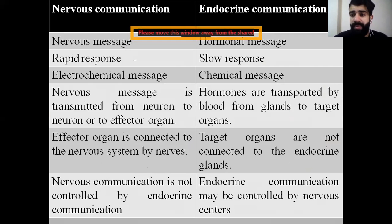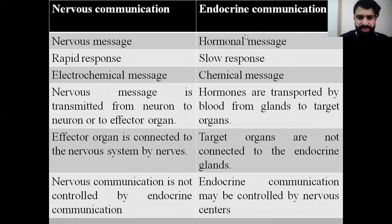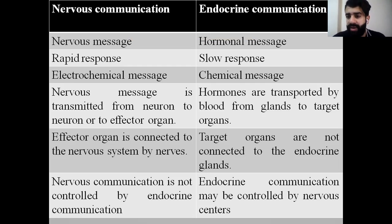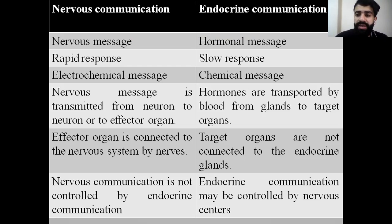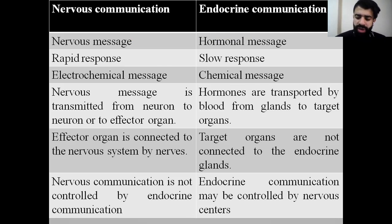The nervous message is an electrochemical one — it depends on the concentration of ions and electric impulses — whereas the endocrine communication is a chemical one. The nervous message is transmitted from one neuron to another neuron, or from one neuron to an effector organ or gland, while hormones are transported through the blood from one gland toward their target organ. An effector organ is connected to the nervous system by nerves, while target organs are not connected to the endocrine glands.